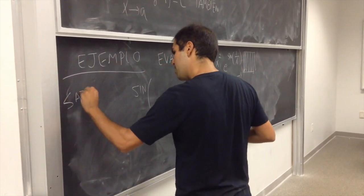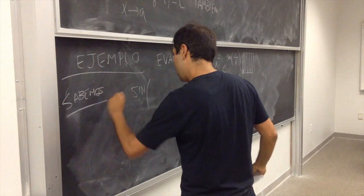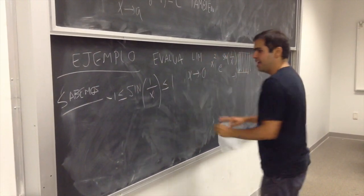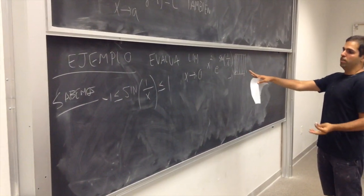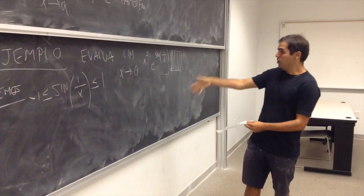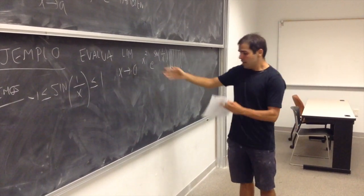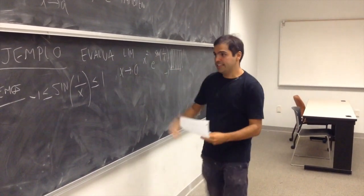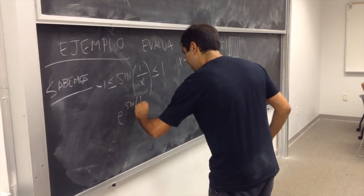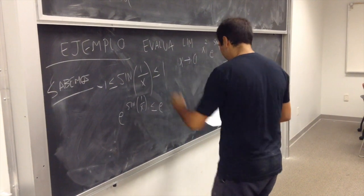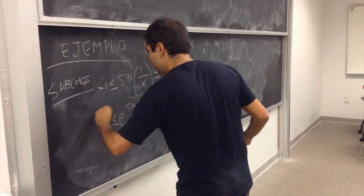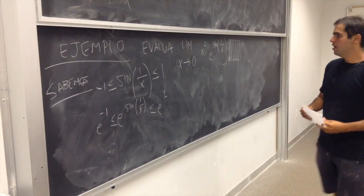Entonces, sabemos que seno de 1 por encima de x es entre menos 1 y 1, y por eso sabemos también que e a la seno de 1 por encima de x es entre e a la menos 1 y e a la 1.